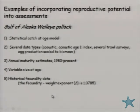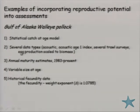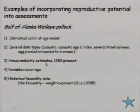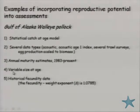The first case study is the Gulf of Alaska Walleye Pollock model that Martin Dorn leads. It's a statistical catch-at-age model with many different data types. One of the most interesting for our purposes is an egg production survey from the 1980s and early 1990s, which estimated egg production and scaled it to a model-independent SSB estimate. This is our only Alaska model with annual maturity estimates. The fecundity data shows that the B exponent is greater than 1, consistent with E.J.'s findings, and there is variable size-at-age with spawners getting bigger over time — an interesting interaction.